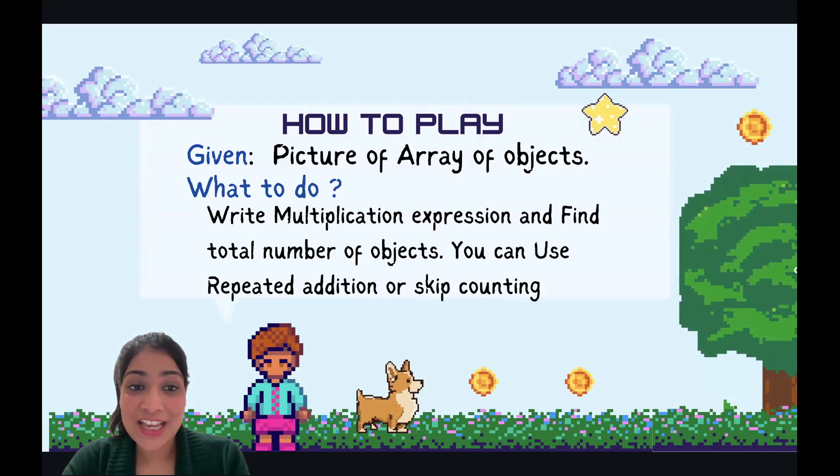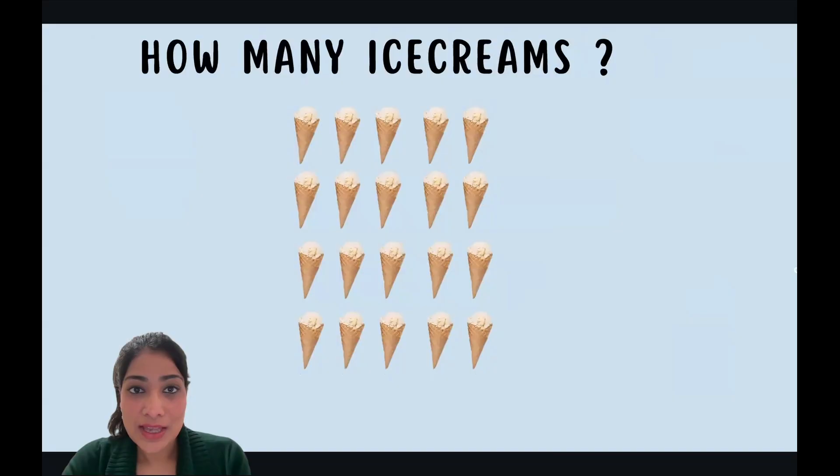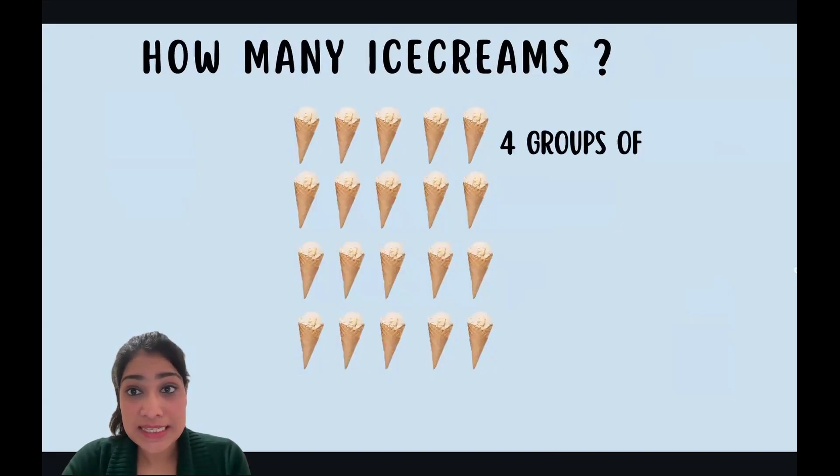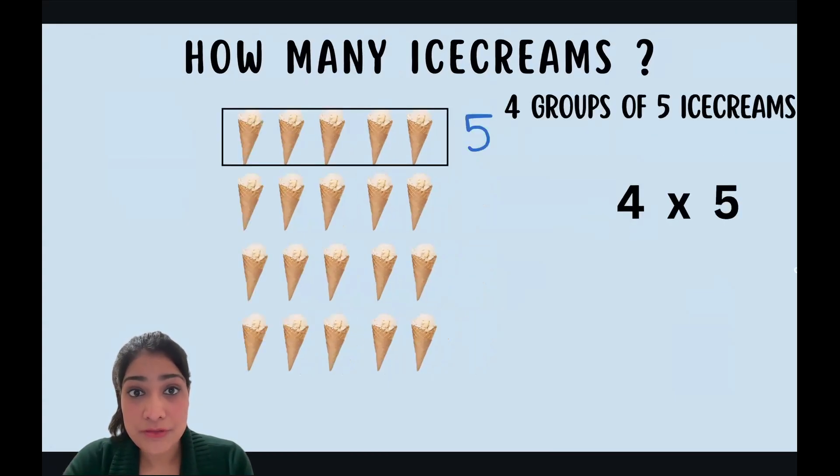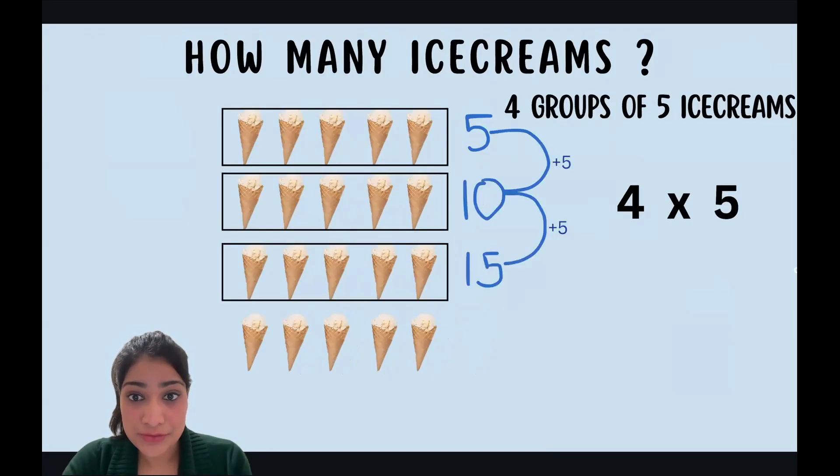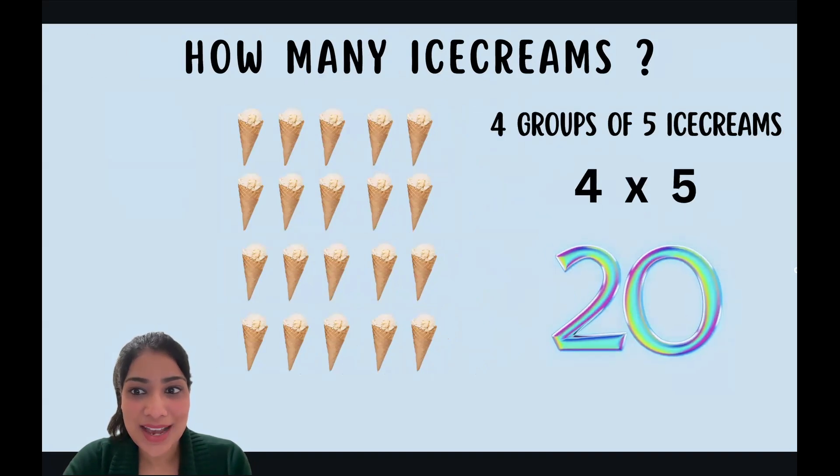Let's play one together. Okay, how many ice creams? Well, we can see it's four groups of five ice creams, so this will be four times five. In the first row there are five ice creams, plus five is ten, plus five is fifteen, plus five is twenty. So total there are twenty ice creams.